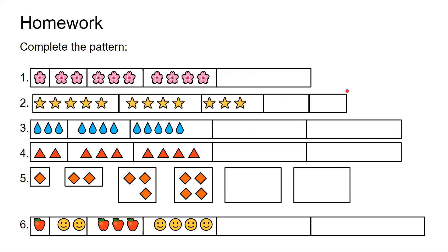Now let us see this question. In the first question, what is happening? One flower, two flowers, three flowers, four flowers. So in this pattern, as we are moving ahead, it is increasing by one. One more flower is being added each time. So first one flower, then two, then three, then four. Can you guess how many flowers we will have next? We will have five.